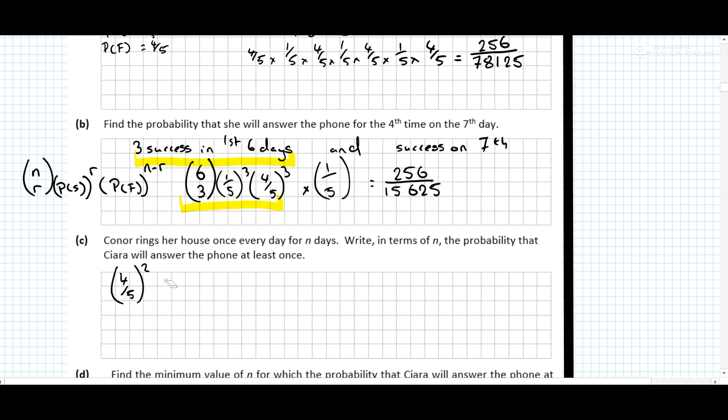If it was 3 days, what's the probability she doesn't answer the phone in any of the 3 days? Be 4 over 5 cubed. What's the probability she doesn't answer the phone in n days? That's the probability she doesn't answer the phone in n days. But that's not what it's asking. It's asking for what is the probability she will answer the phone at least once. This is doesn't answer the phone in n days.